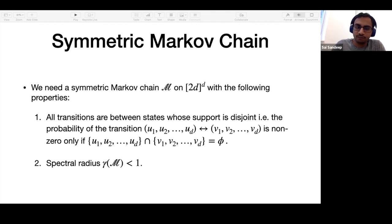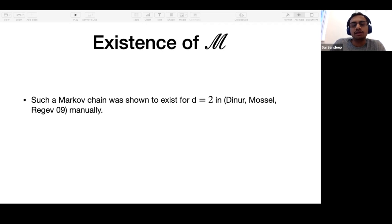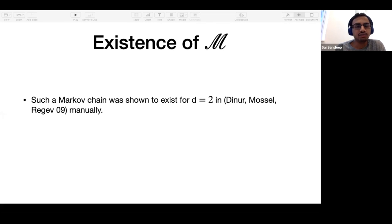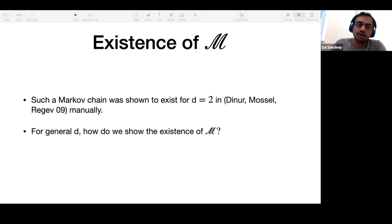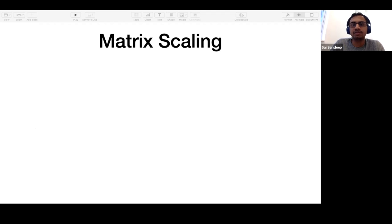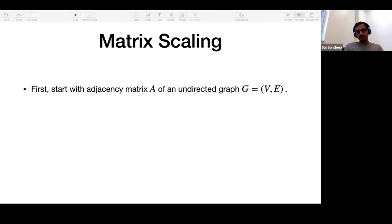How do we construct such a symmetric Markov chain? In the Dinur-Mossel-Regev work for D equal to two, they constructed this matrix manually. But we want to do it for general D. The technique we use is matrix scaling: you start with some arbitrary matrix — in our case, a distance matrix of a certain graph — and in every step, scale either a row or a column. The goal is to construct a doubly stochastic matrix at the end.